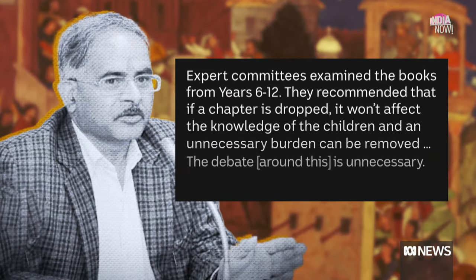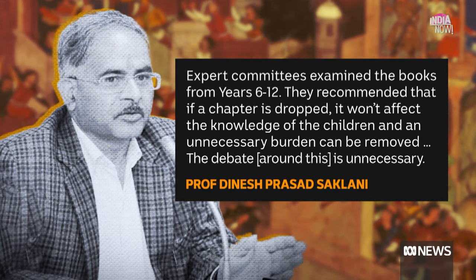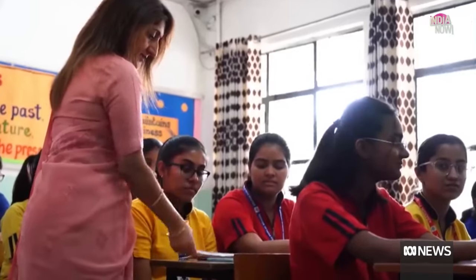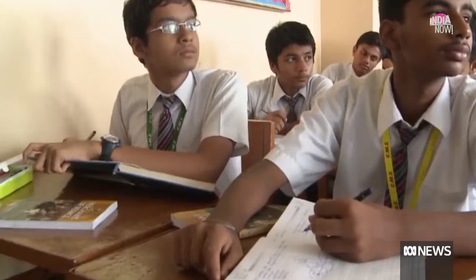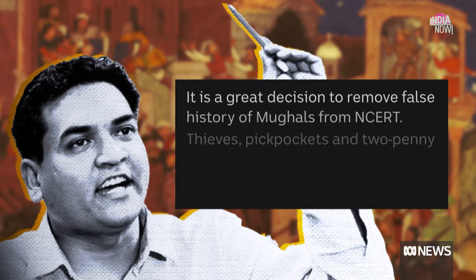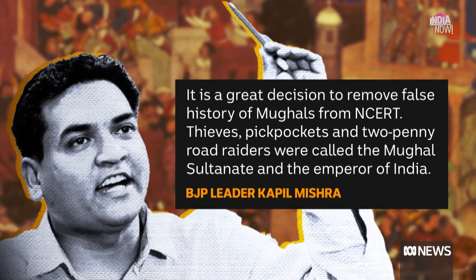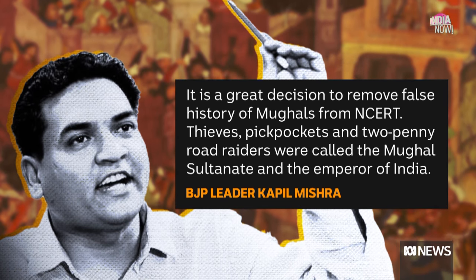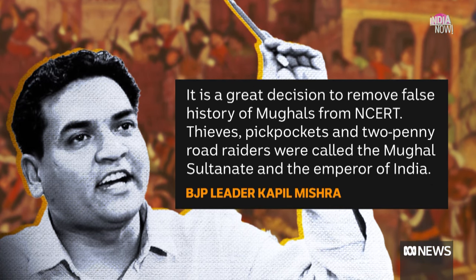NCERT's director, Professor Dinesh Prasad Saklani, said the removals were part of an unbiased rationalisation process to ease the burden on Indian students, some of the most stressed in the world: 'Rationalisation would be that we remove a little bit of information from each chapter and make each chapter a little shorter so that nothing is left out.' But BJP leader Kapil Mishra sees the changes differently, saying: 'It is a great decision to remove false history of Mughals from NCERT — thieves, pickpockets and two-penny road raiders were called the Mughal Sultanate and the Emperor of India.'